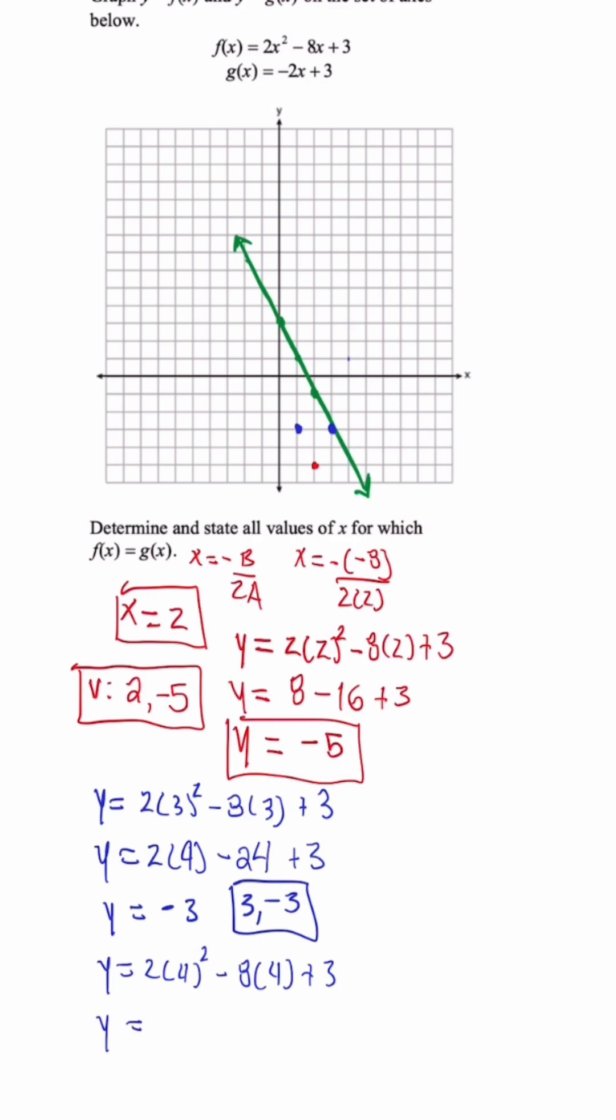So we're going to have 4 squared is 16 times 2 is 32 minus 32 plus 3, so y is equal to 3. So our last order pair is 4, 3, so that's going to be right here.